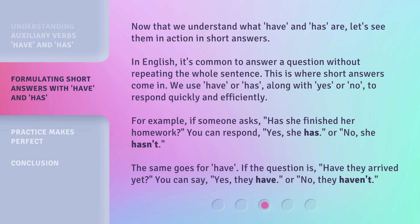Now that we understand what have and has are, let's see them in action in short answers. In English, it's common to answer a question without repeating the whole sentence. This is where short answers come in. We use have or has, along with yes or no, to respond quickly and efficiently. For example, if someone asks, 'Has she finished her homework?' you can respond, 'Yes, she has,' or 'No, she hasn't.' The same goes for have. If the question is, 'Have they arrived yet?' you can say, 'Yes, they have,' or 'No, they haven't.'